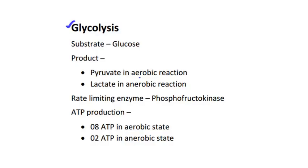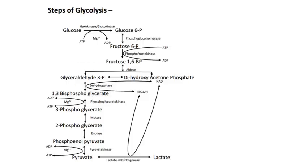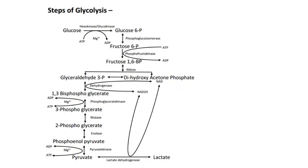In aerobic glycolysis, glucose is converted to pyruvate, and in anaerobic glycolysis, glucose is converted into lactate. The rate-limiting enzyme is phosphofructokinase. Regarding ATP production: in aerobic state, 8 ATP is produced per glucose, and in anaerobic state, 2 ATP is produced. We will calculate this ATP production later. Now we will see the steps of glycolysis.